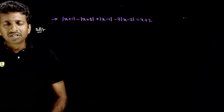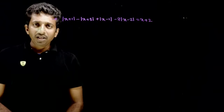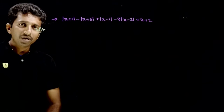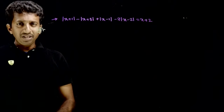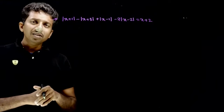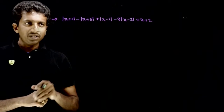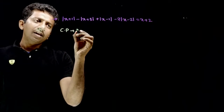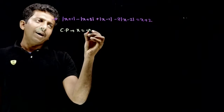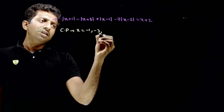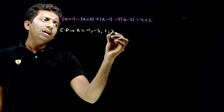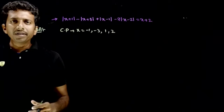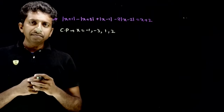To solve modulus questions, we try to find out the critical points. Critical points are points where the expression inside the mod is equal to 0. So the critical points are x = -1, -3, +1, and +2. These are the critical points for this question.